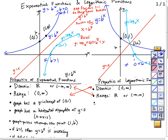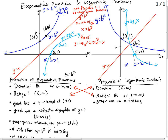An exponential function has a y-intercept at 0, 1. Here's the point 0, 1. So what is this point on the inverse? We switched the x and y, so that's the point 1, 0. Same for this one — also 1, 0. So the logarithmic graph has an x-intercept at 1, 0. We switched the x and y's.